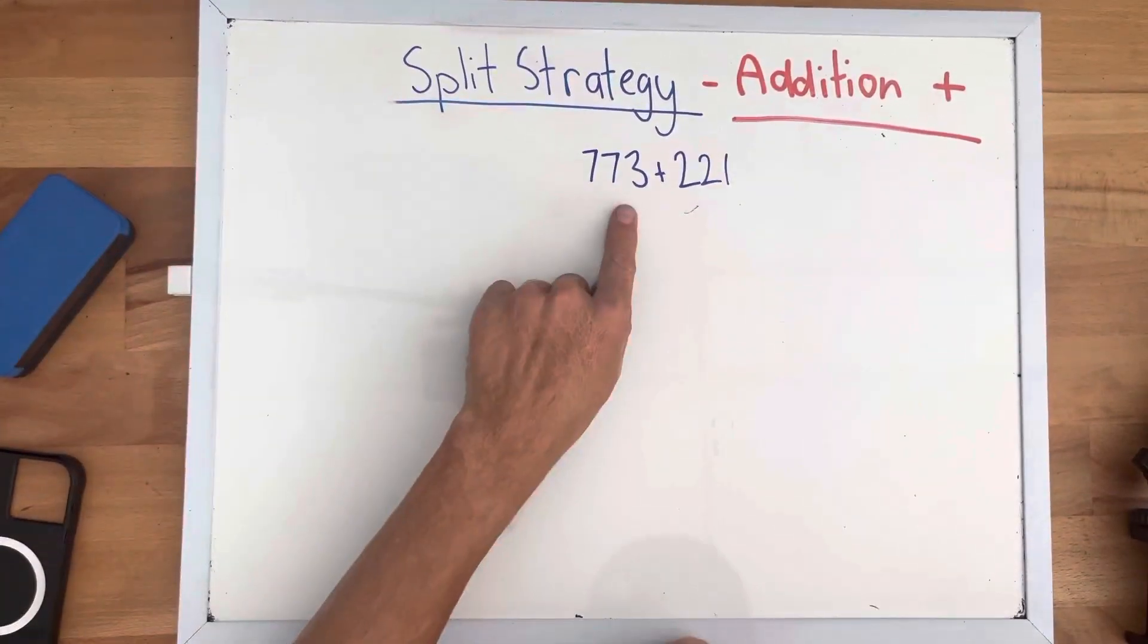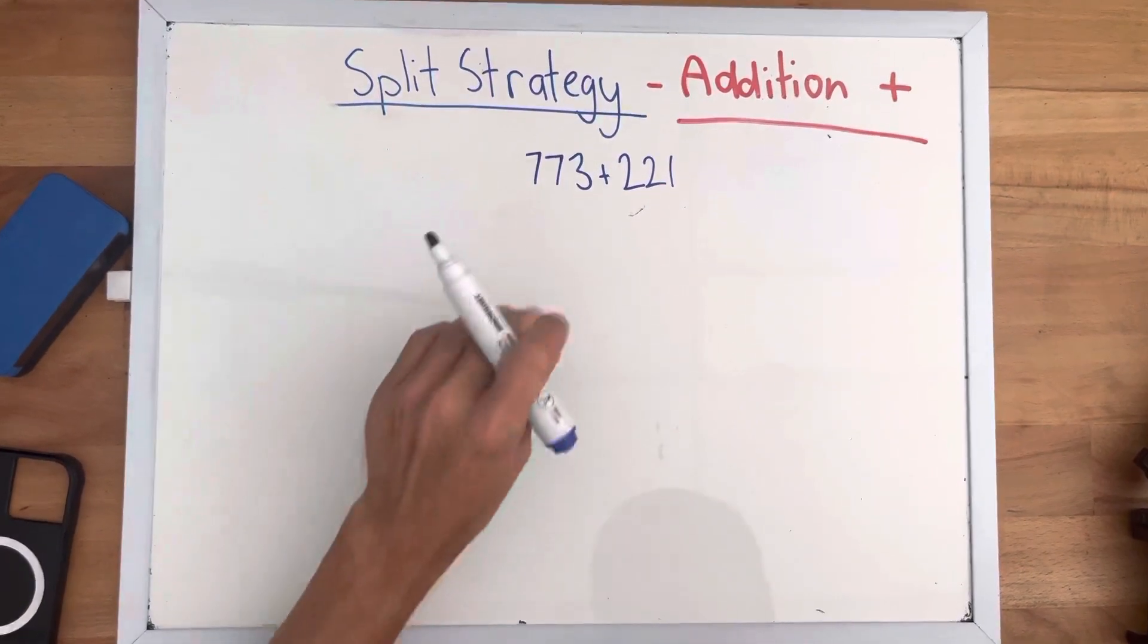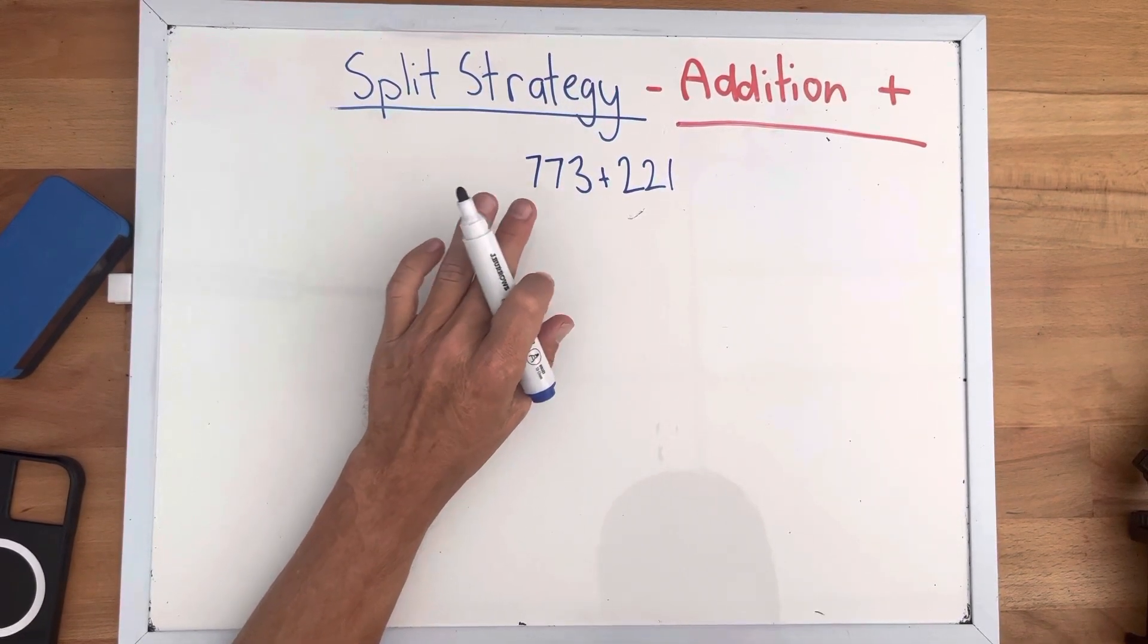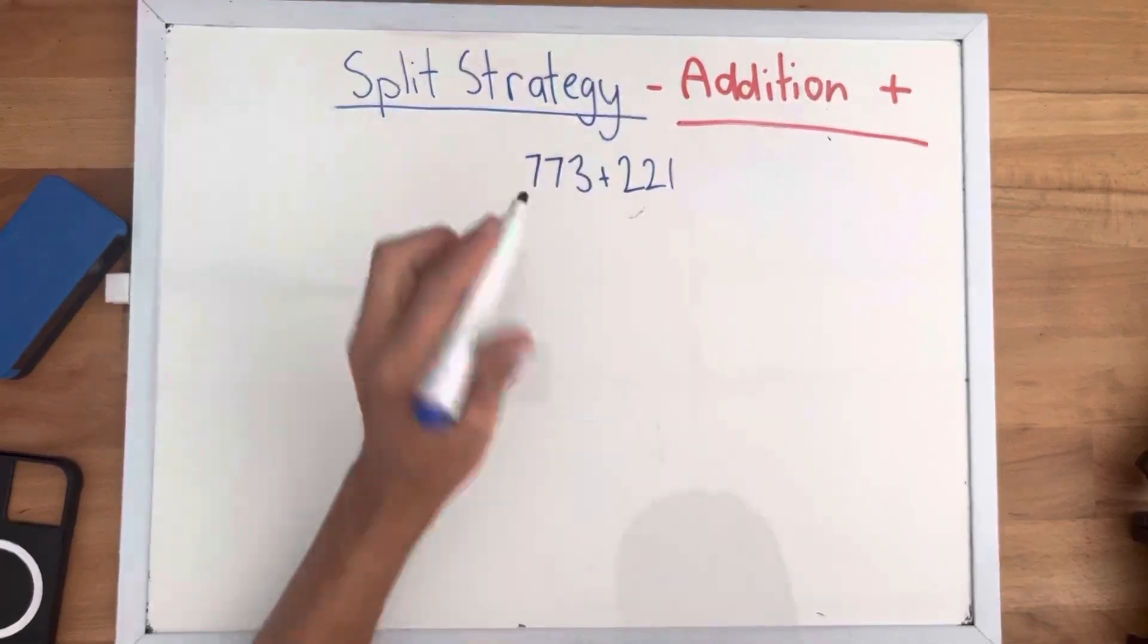Now let's go to our three digit split strategy for addition, again without trading. So we need to split it into our hundreds, our tens and our ones.